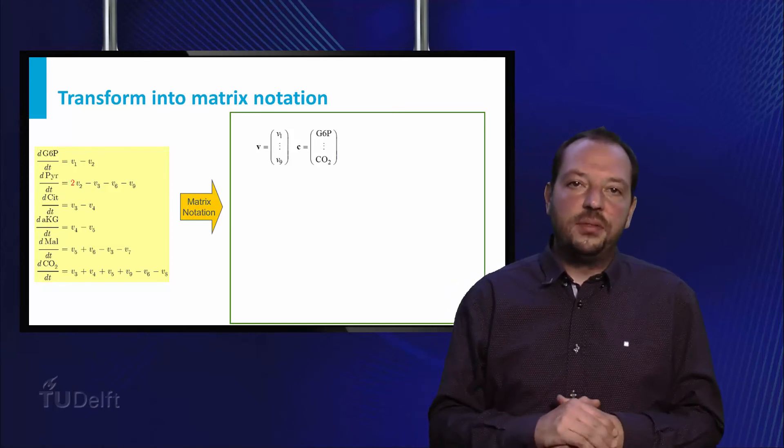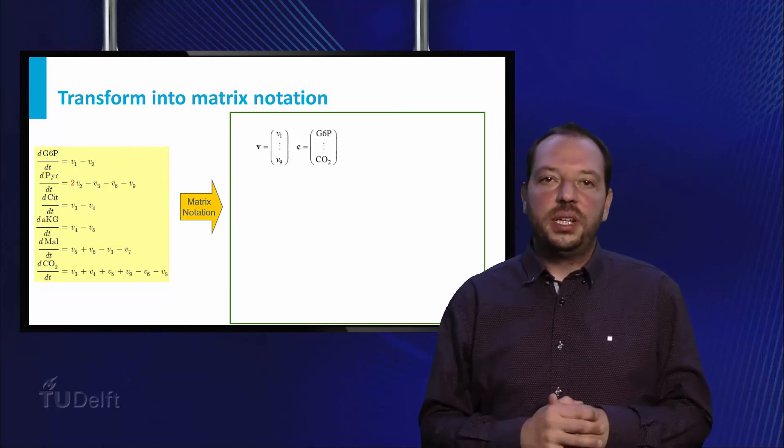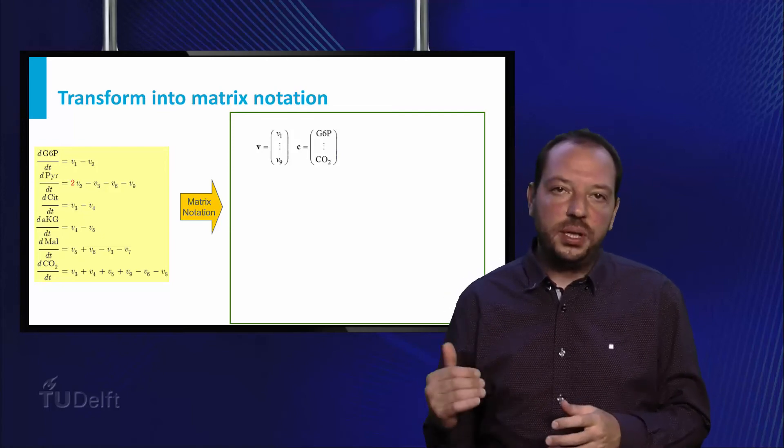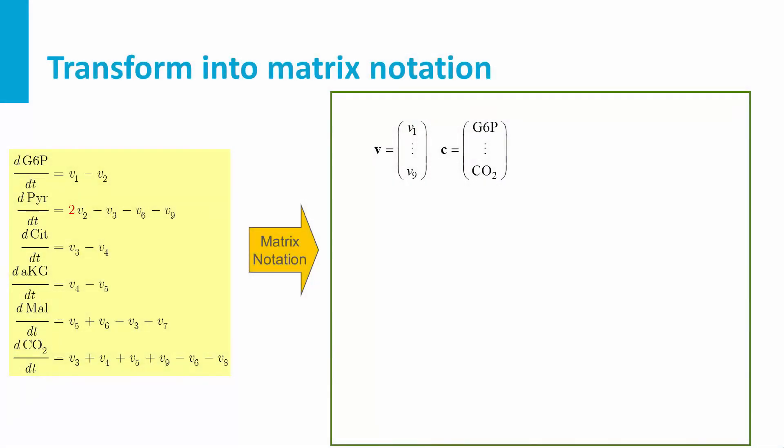Thus, here we define a flux vector containing V1 in position 1, V2 in position 2, until V9 on position 9. The right-hand side defines the order of the equations.